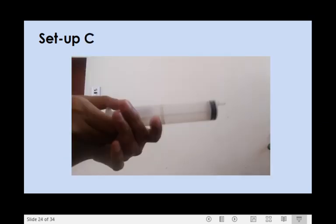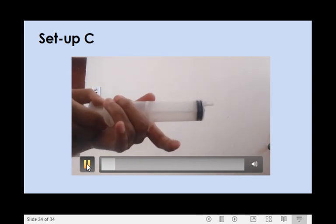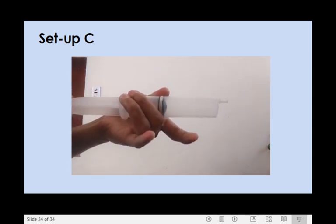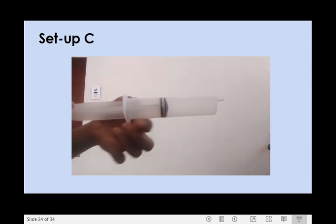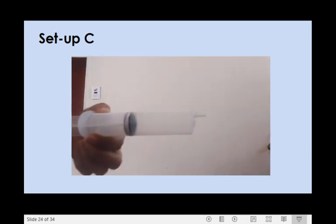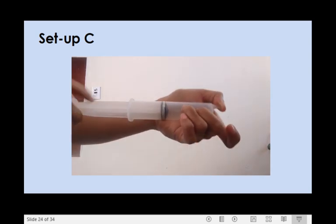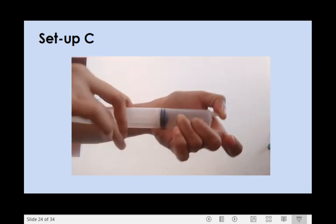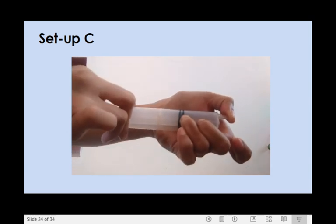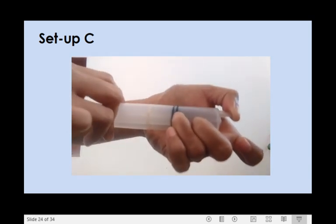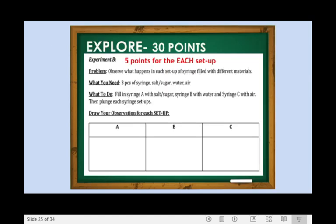For setup C, fill the syringe with air by pulling the plunger off the syringe until it reaches the 30 ml mark. Press your thumb on the tip of the plunger and use your other thumb to push the plunger once. And again, you have to draw your observations for each setup.